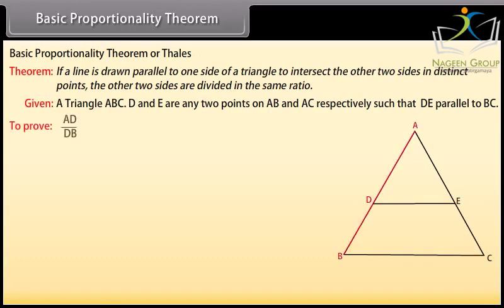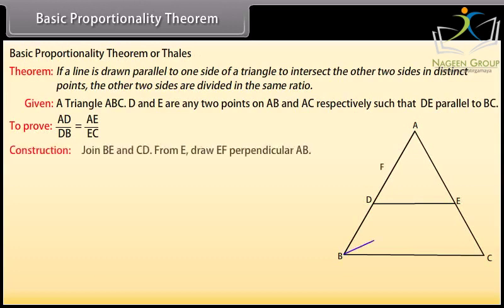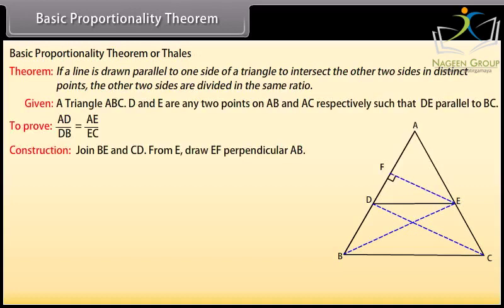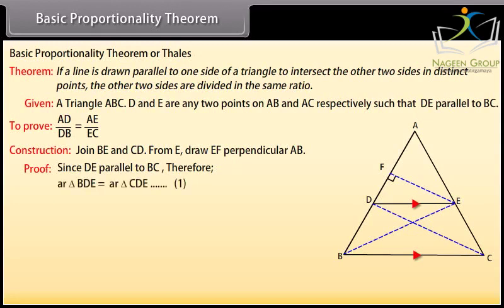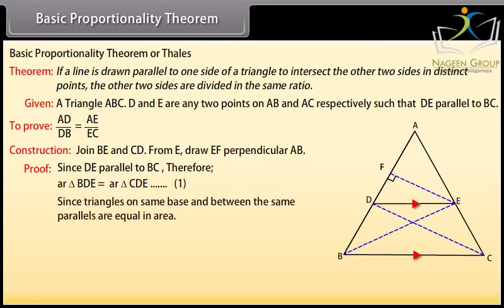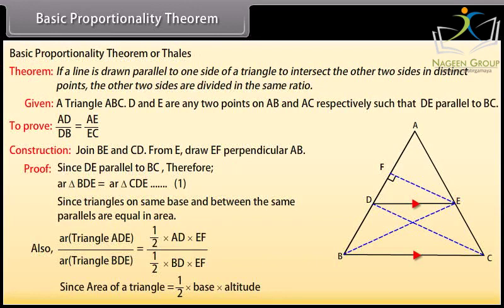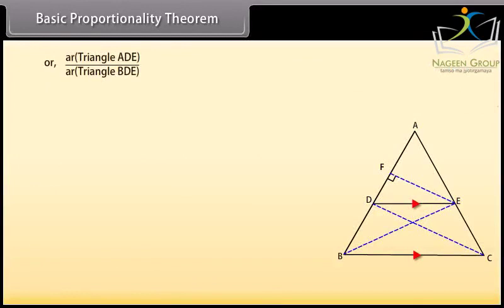To prove: AD upon DB equals AE upon EC. Construction: Join BE and CD. From E, draw EF perpendicular to AB. Proof: Since DE is parallel to BC, area of triangle BDE equals area of triangle CDE — mark it as equation 1 — since triangles on the same base and between the same parallels are equal in area. Area of triangle is equal to half times base times altitude.